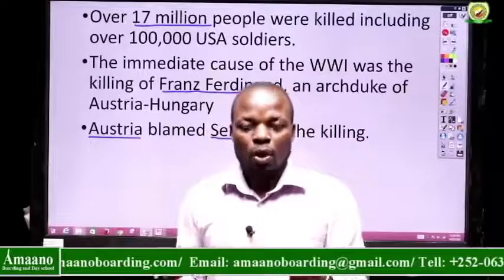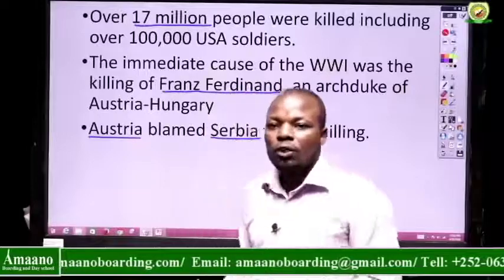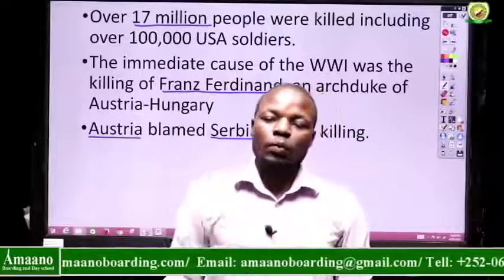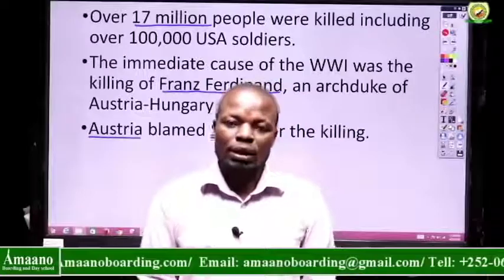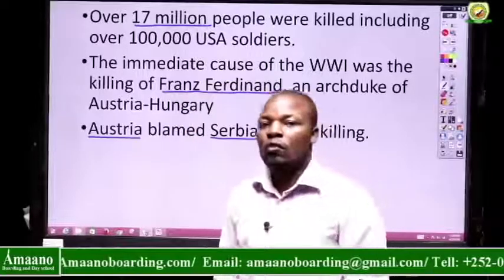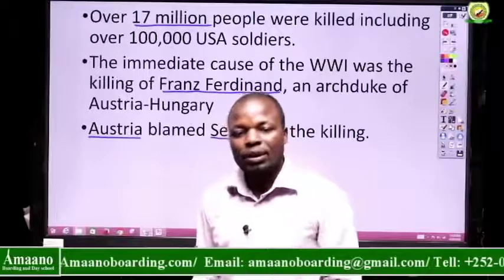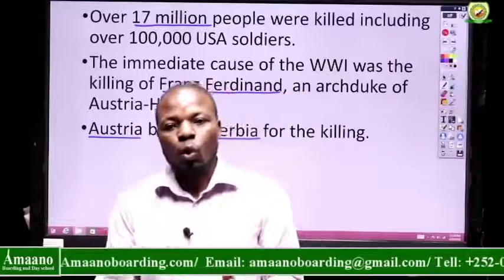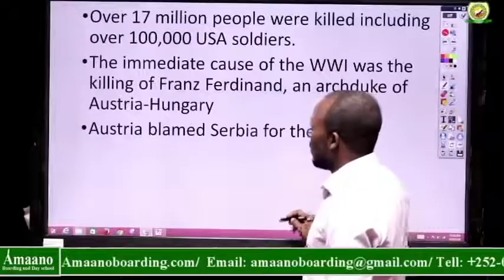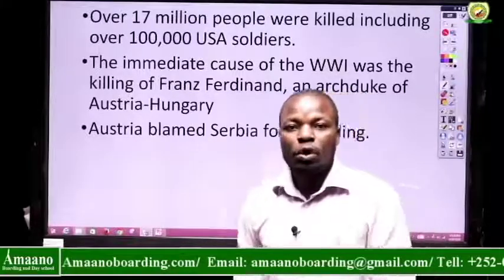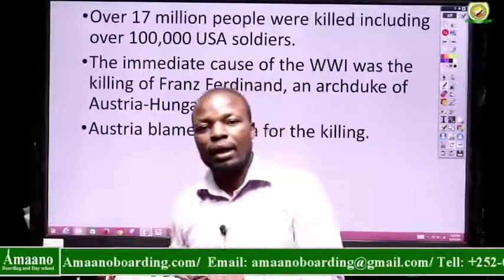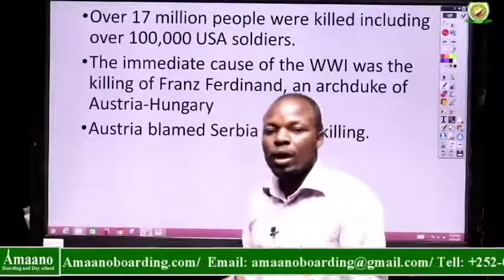Austria-Hungary blamed Serbia for the killing of Franz Ferdinand. When you are asked what the immediate cause of the First World War was, you should state that it was the assassination of Franz Ferdinand, who was an Archduke of Austria. Austria declared war and attacked Serbia. Some of you may not know where Austria is — we shall look at a map of Europe showing Austria, its neighbors including Italy, France, and Serbia.